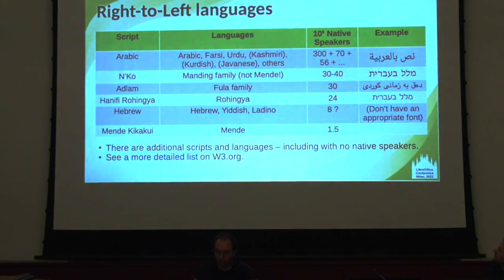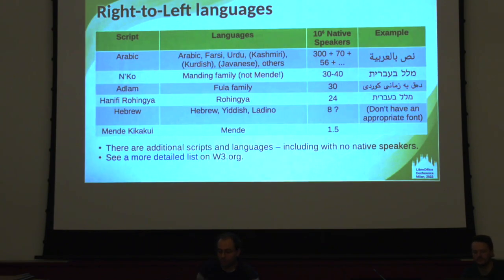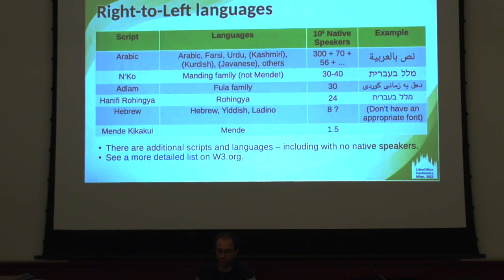Right-to-left languages — so ignore the example column except for the first two cells. The most popular written script is Arabic, and a lot of languages use it, including in different parts of the world, not only in the Arab East but in Central and Western Asia. There's the Neko language or script used by languages in Africa, which is the second largest.